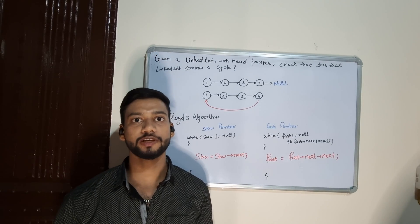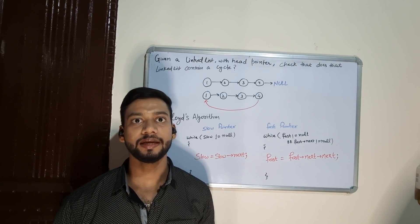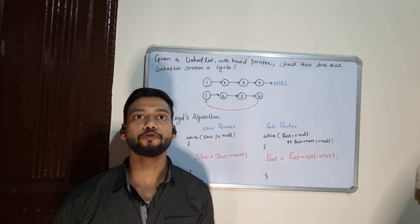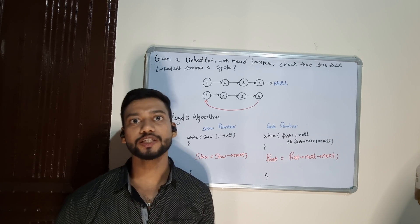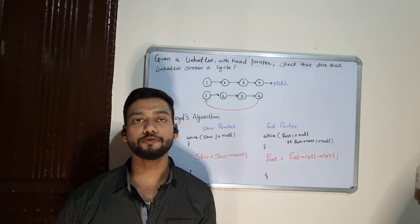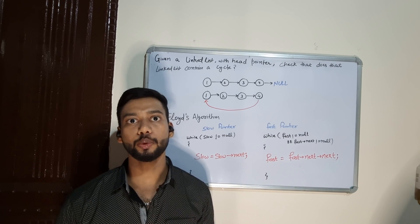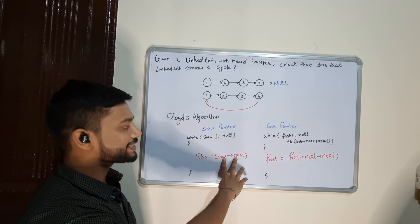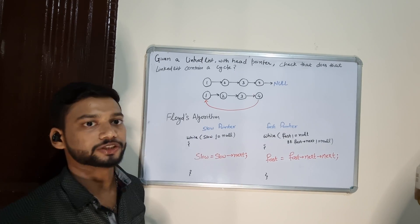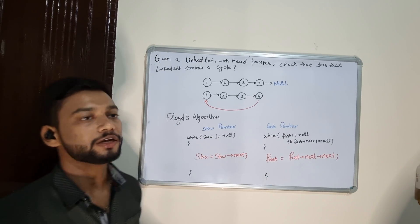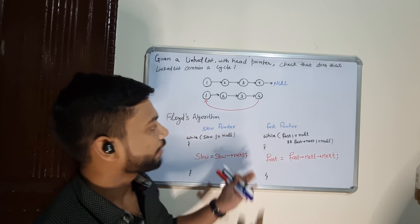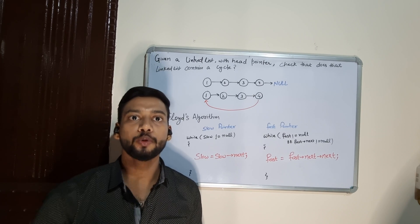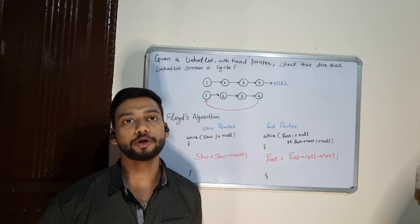We can also solve this problem in O(N) time but with constant space complexity. For that we use Floyd's algorithm, also known as the slow and fast pointer algorithm. The slow pointer moves only one step ahead per iteration, while the fast pointer moves two steps ahead per iteration. The basic idea is that the slow pointer moves slowly compared to the fast pointer.